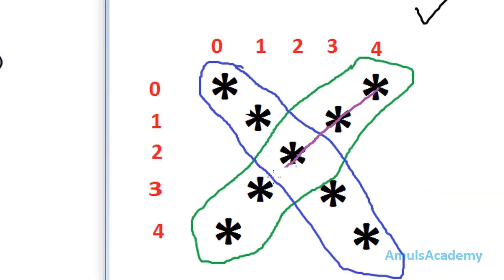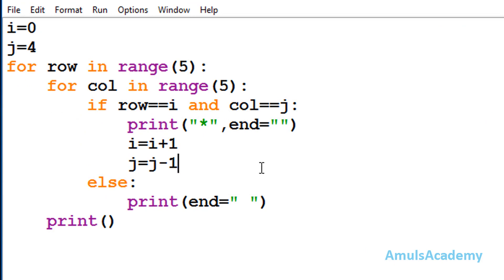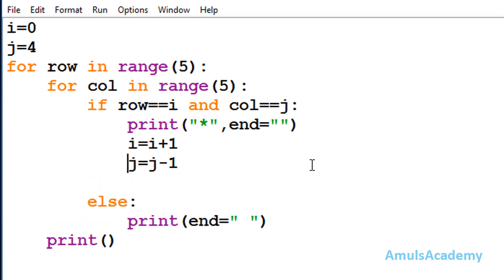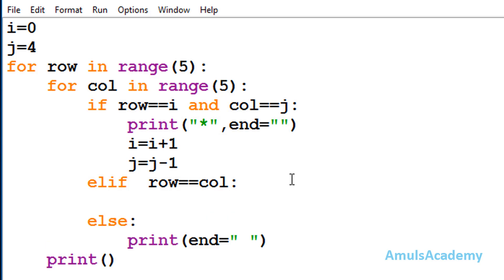Now we need to handle the next part. Here we can see stars at row 0 column 0, row 1 column 1, row 3 column 3, row 4 column 4 — that is when row is equal to column I want to print a star. So here I will take elif (else if): when row is equal to column, print a star.